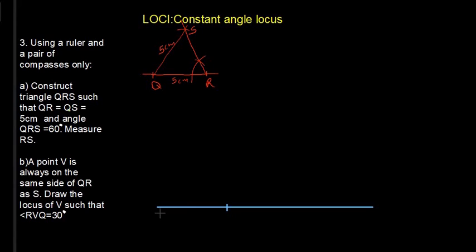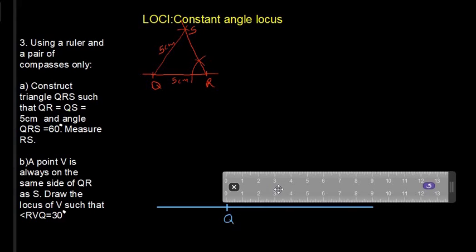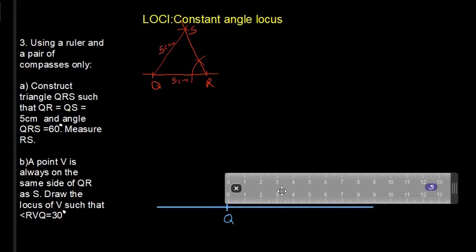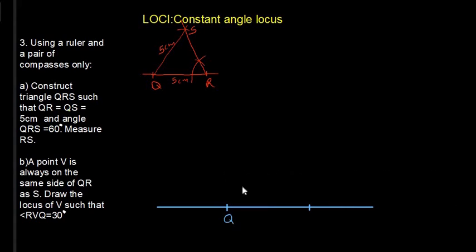So we are going to draw line QR. So at this point we can have Q. So let's have Q there and for us to know the position of R, we measure 5 cm away from Q towards the right. So from that point 5 cm is located right there. Then we can remove the ruler and mark that point R.